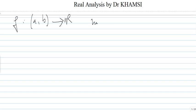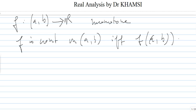And we assume that it is monotone. What we want to show is that F is continuous on (a,b) if and only if F((a,b)), the image of the interval, is an interval.